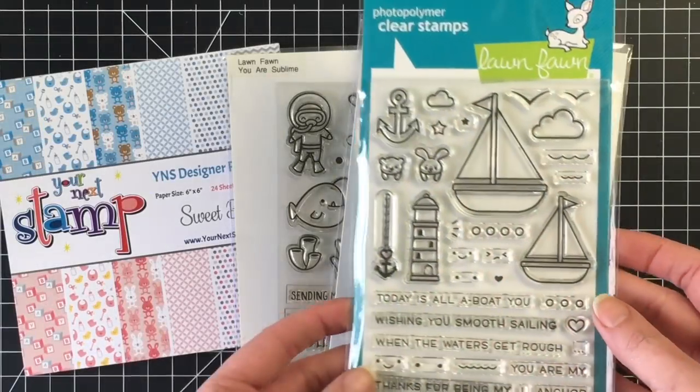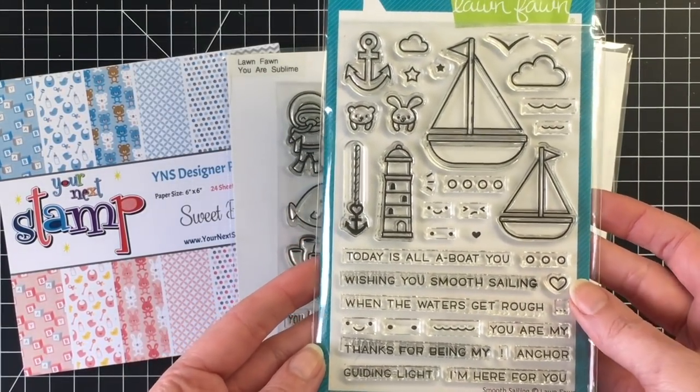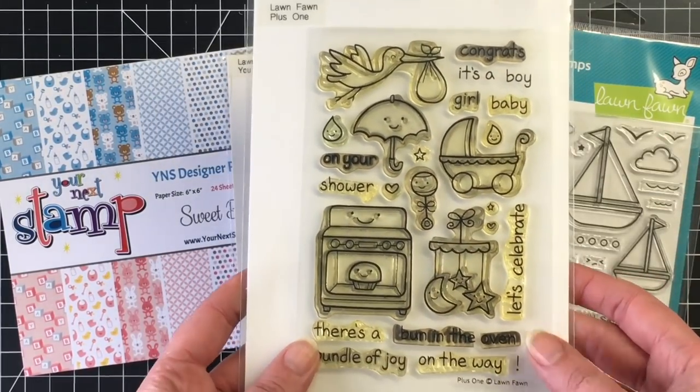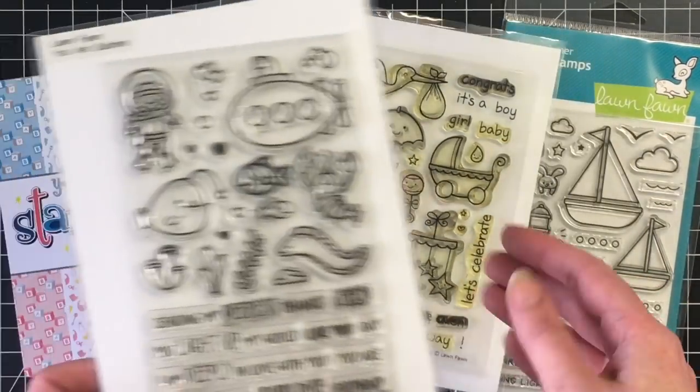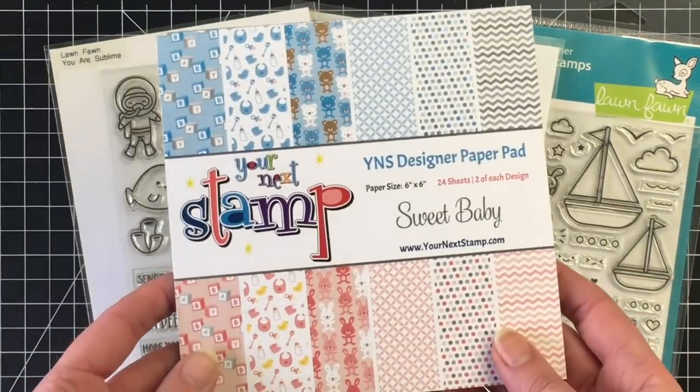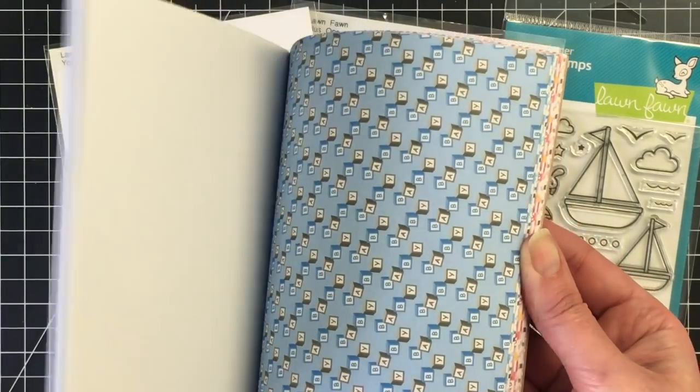I'll show you a quick glance at what I'm using. Here's the Smooth Sailing Stamp Set. I brought in the old but goody stamp set Lawn Fawn Plus One for the sentiments. And then I'm using the little rock again in the UR Sublime like I did in the first two cards.